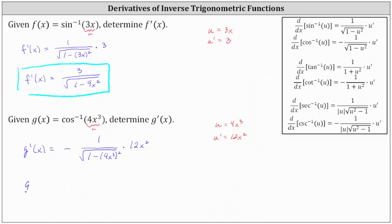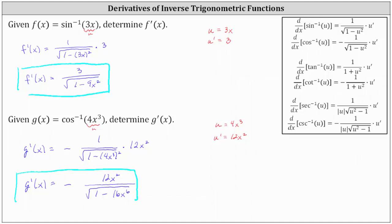Simplifying, we have g prime of x equals negative 12x squared divided by the square root of the quantity one minus the square of 4x cubed, which is one minus 16x to the sixth. I hope you found this helpful.